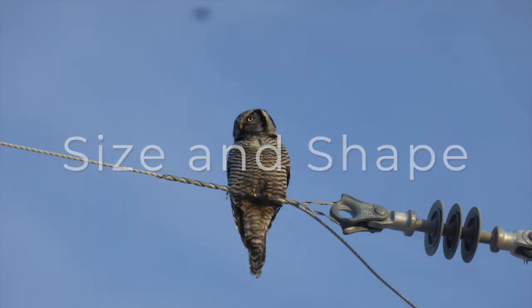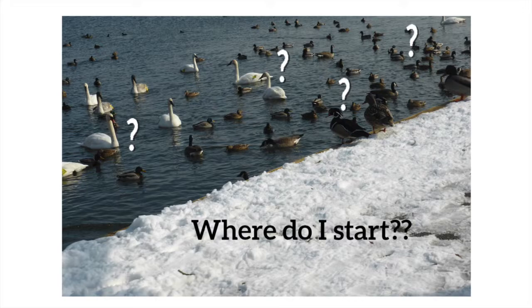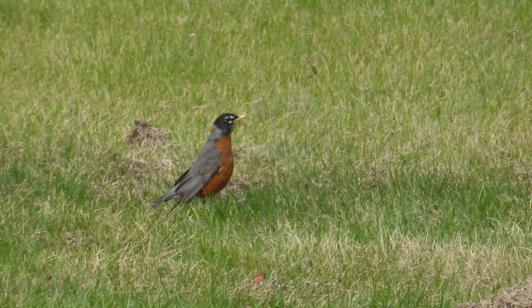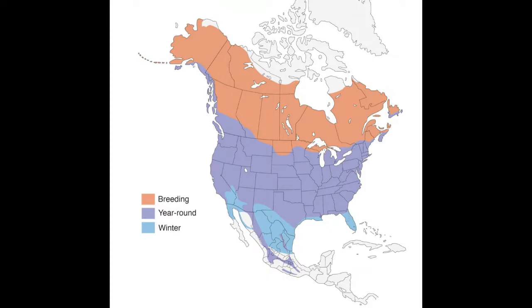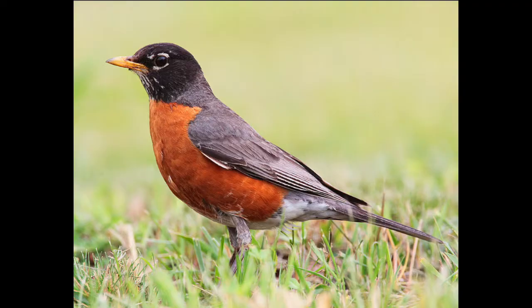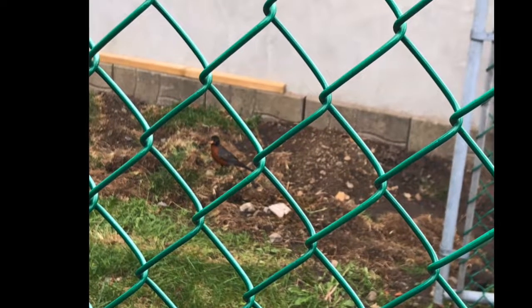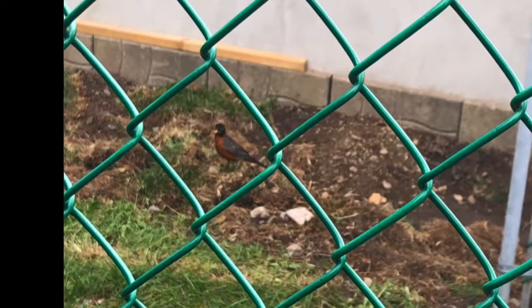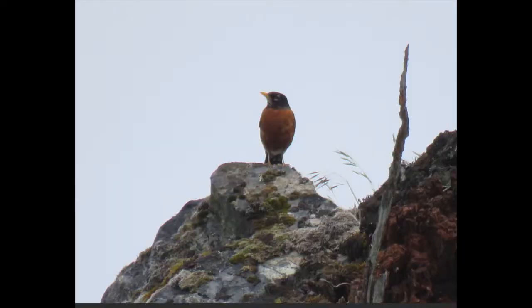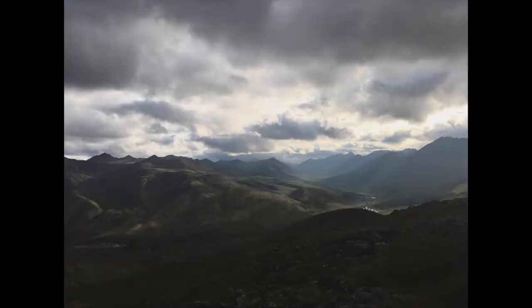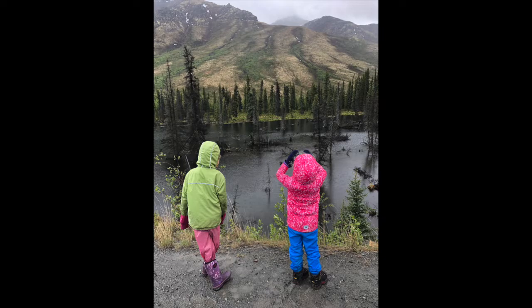To begin determining the size of a bird, it's helpful to use a comparison you already know. Let's use a bird that can be found almost anywhere in North America: the American Robin. This medium-sized songbird is found all over in pop culture, and for good reason — it thrives everywhere from the grassy patches in downtown Toronto to the high mountain slopes in Tombstone Territorial Park. For that reason, it's the first bird most people learn to recognize on their own.